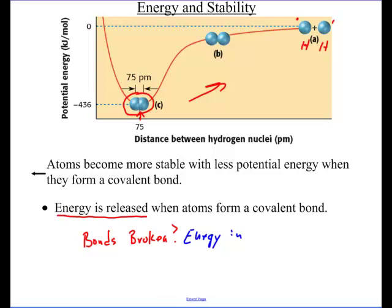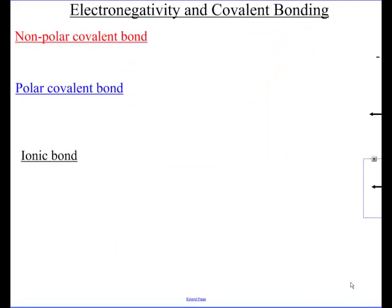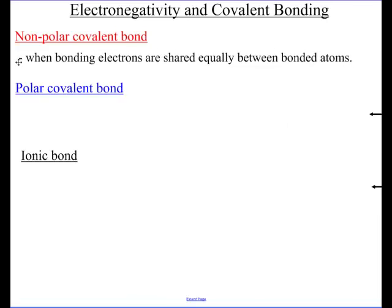So let's talk about the next step in sharing because there's two ways of sharing. There's an equal sharing and there's an unequal sharing. If it's an equal sharing, we call it a non-polar covalent bond. In other words, we've got these two atoms. They're together. I'm going to use hydrogen because it's an easy example.